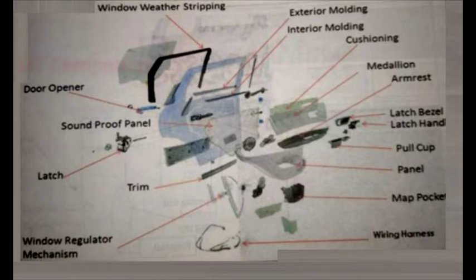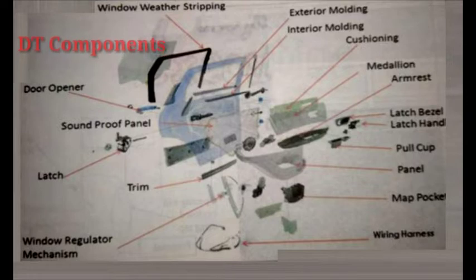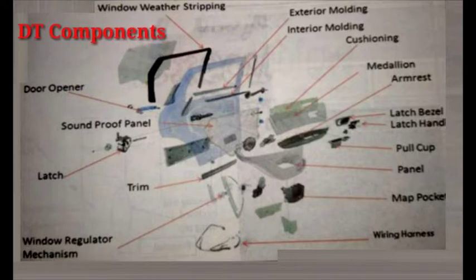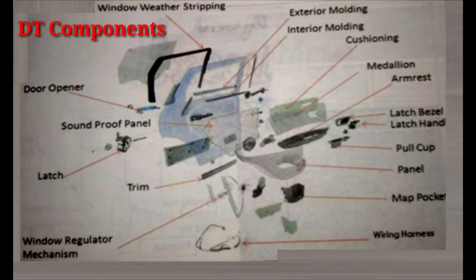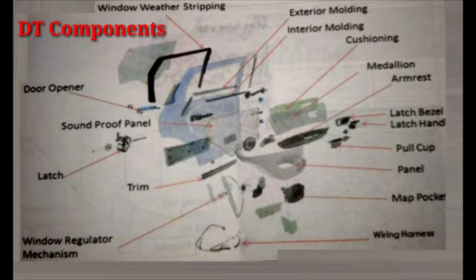First of all, we are going to see the components of the door trim system. You can see in the image an exploded view of the door trim. These are the basic elements: window weather stripping, exterior molding, interior molding, cushioning, medallion, armrest, latch bezel, latch handle, pull cap, panel, map pocket, wiring harness, window regulator mechanism, trim, latch, soundproof panel, and door opener. All these are the components of the door panel.